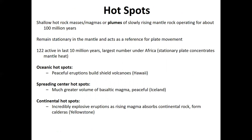Hotspot volcanoes are volcanism that does not occur along plate boundaries. There are phenomena in the mantle where small pipe-like upwellings of mantle rock — known as plumes — rise from the lower mantle toward the surface. We do not fully know why they occur, but these plumes last for many millions to hundreds of millions of years and remain fairly stationary in the mantle.